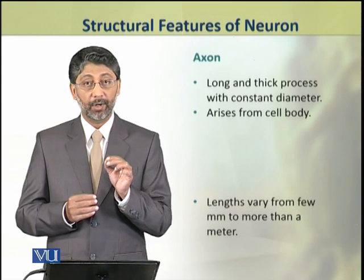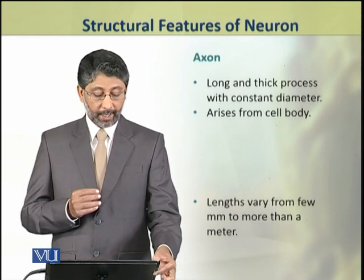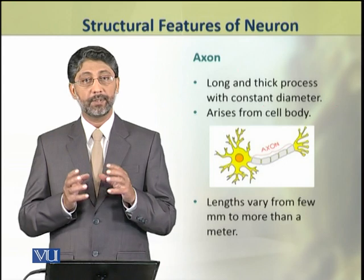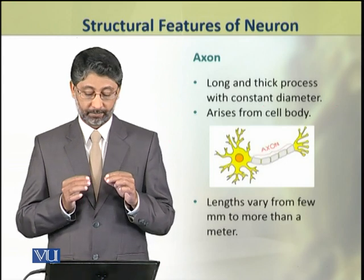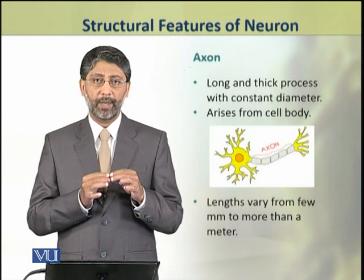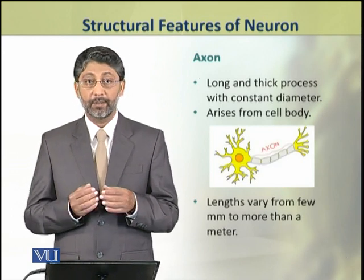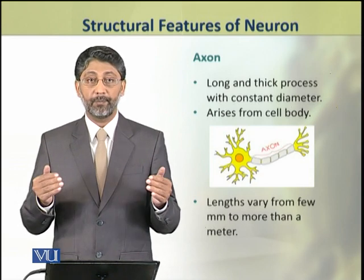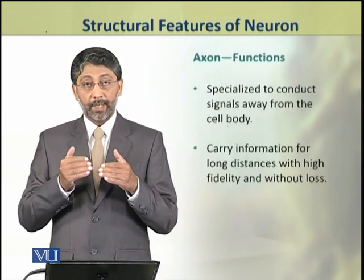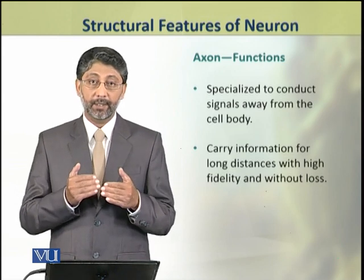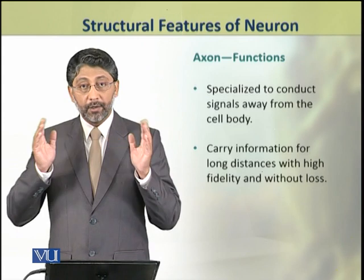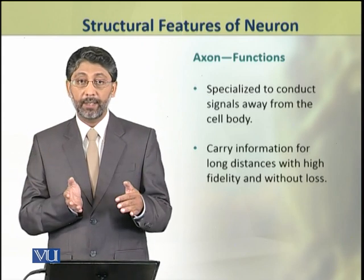Now we shall discuss the axonal part of the neuron. The axons are long and thin processes that extend from the cell body. They have a constant diameter. The axons are specialized to conduct signals away from the cell body. They carry information for long distances with high fidelity and without loss.